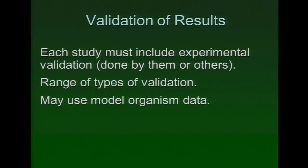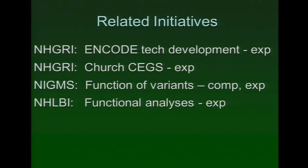For validation methods, there's a range of types — they can use model organism data. The concept clearance encourages innovation in methods for validation. What Joe Acker was saying about CRISPR methods or zinc finger-based approaches may make for very nice validation that's not too expensive. NIGMS had an RFA related to figuring out function of variants both experimental and computational, including databases — they made about eight awards, only one or two of which are kind of related to this at all. So they haven't solved the problem. Other institutes, including ours, are developing some experimental datasets for functional methods, and those will be good datasets to use.